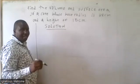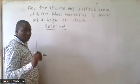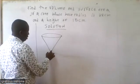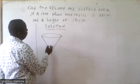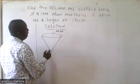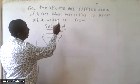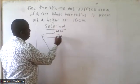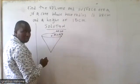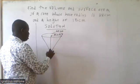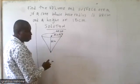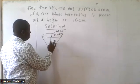There's a question on volume and surface area of a cone. Our cone looks like this, with a circular base. We need to find the volume and surface area of a cone whose base radius R is 28, and the perpendicular height is 15 centimetres.